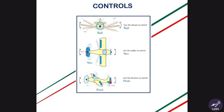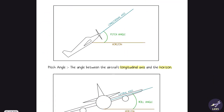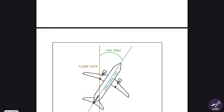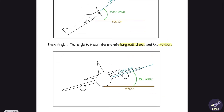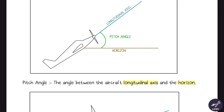Welcome back. Today we will be doing controls, which will include the primary as well as the secondary controls. We look at three different angles: pitch angle, roll angle, and the yaw angle. Pitch angle is the angle between the longitudinal axis and the horizon.